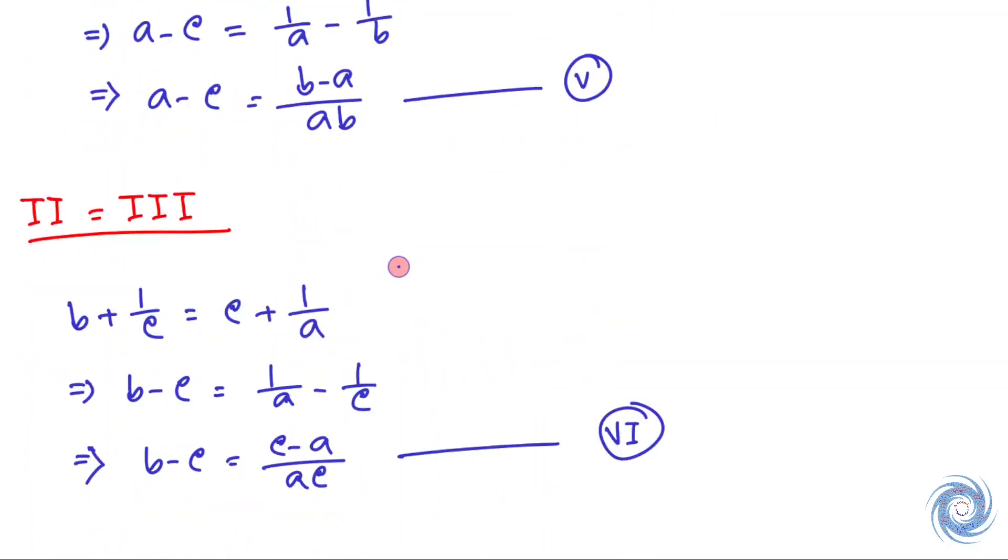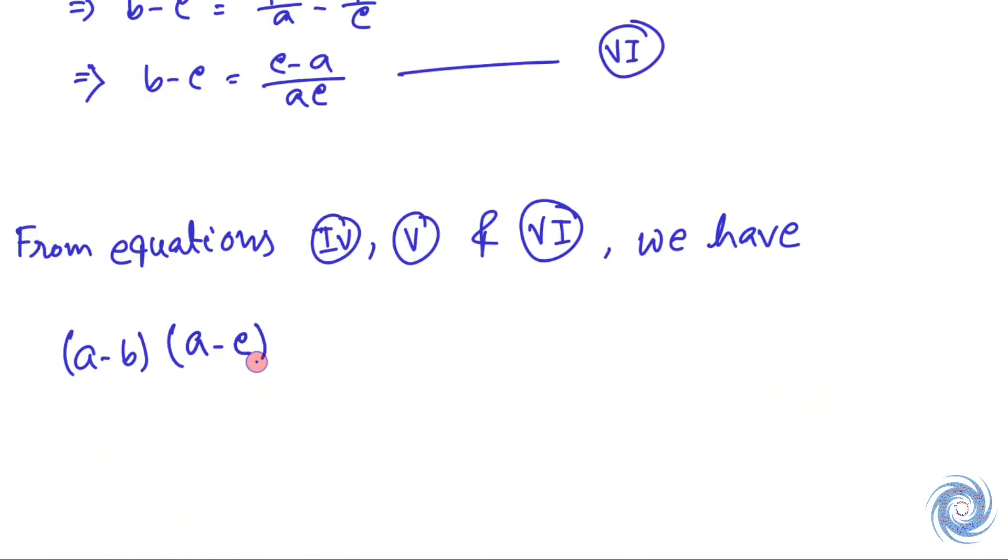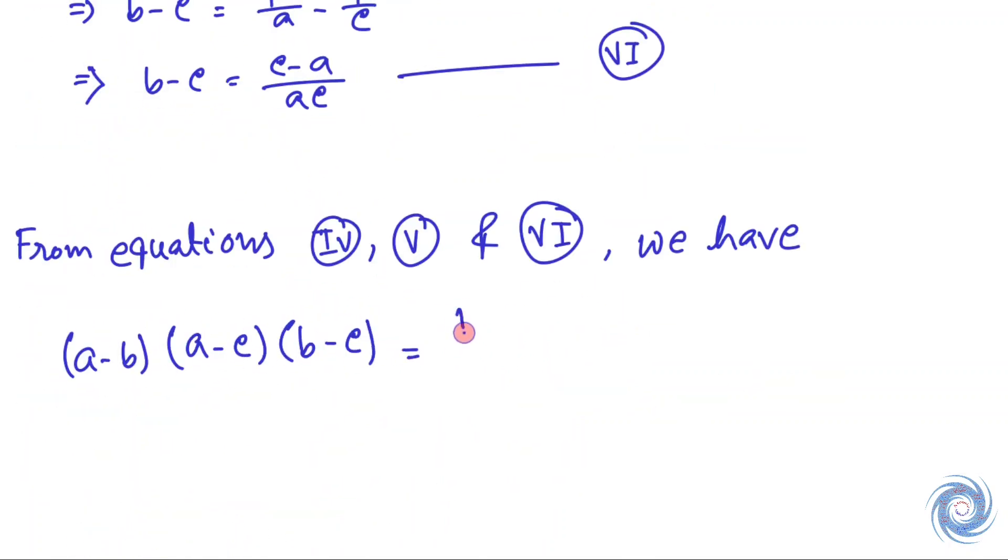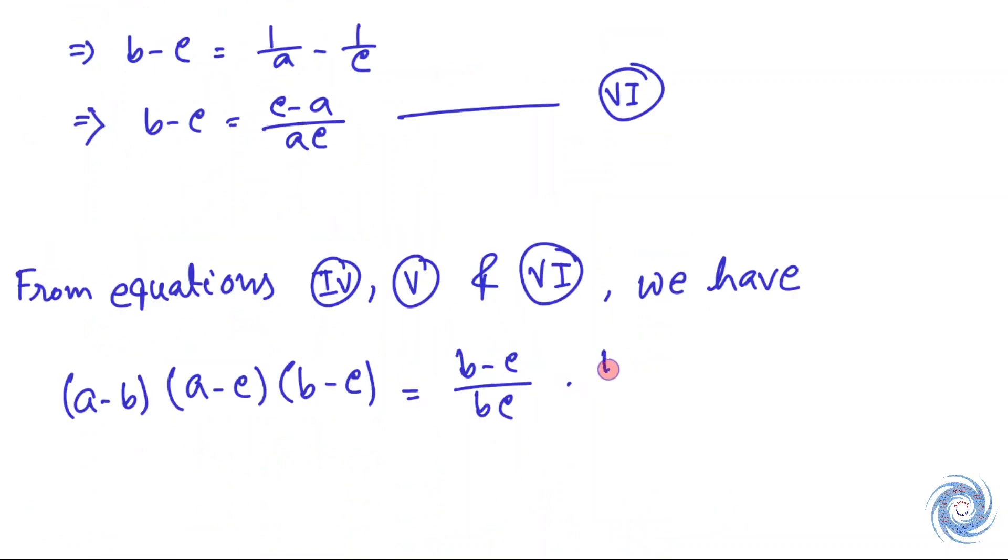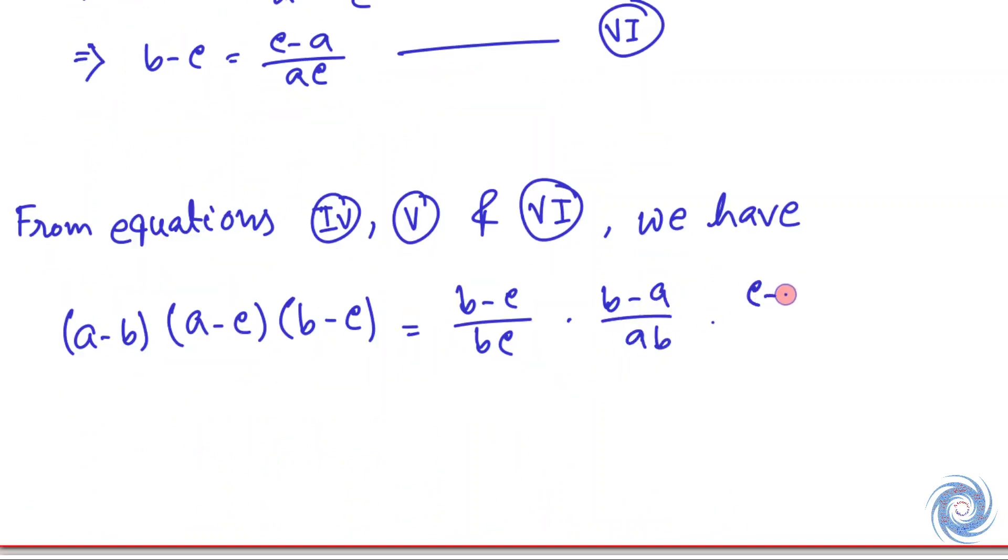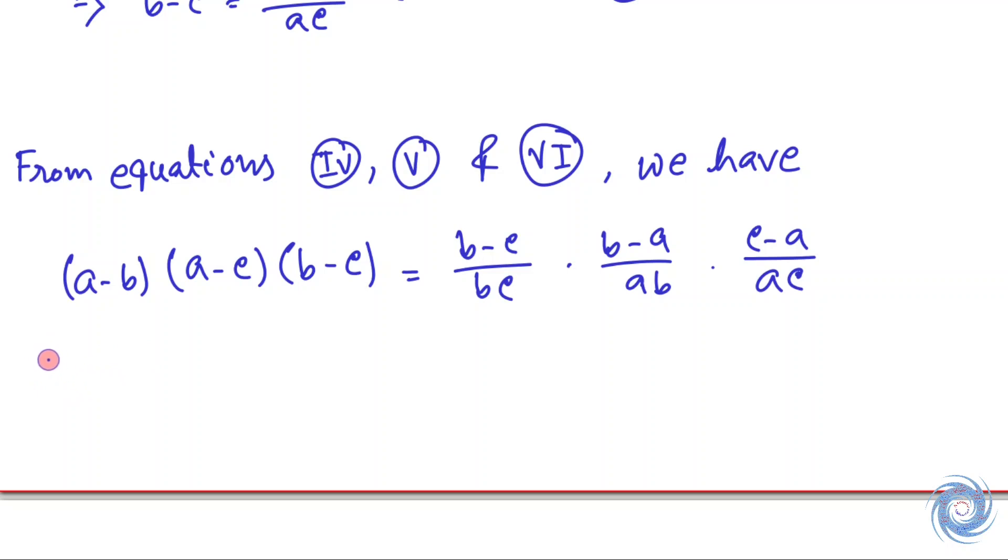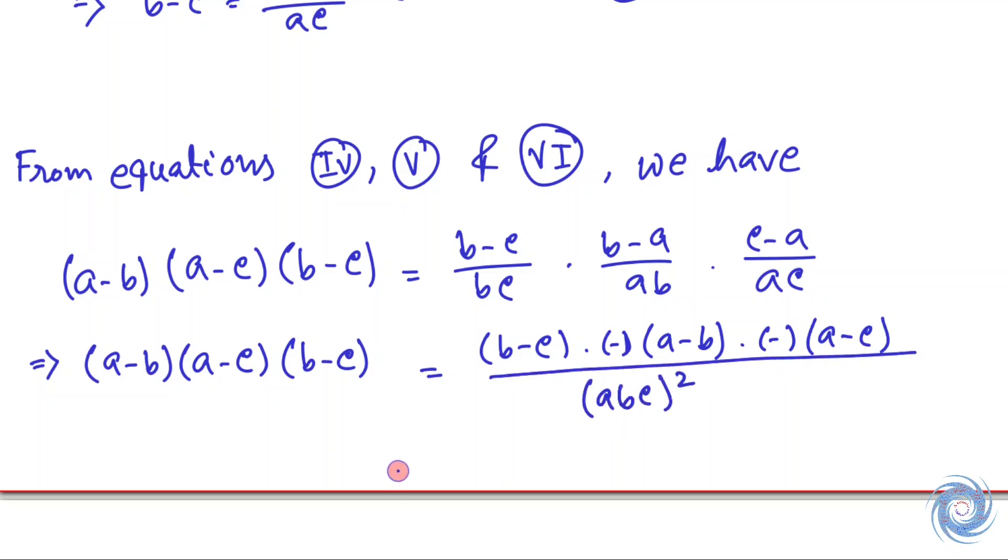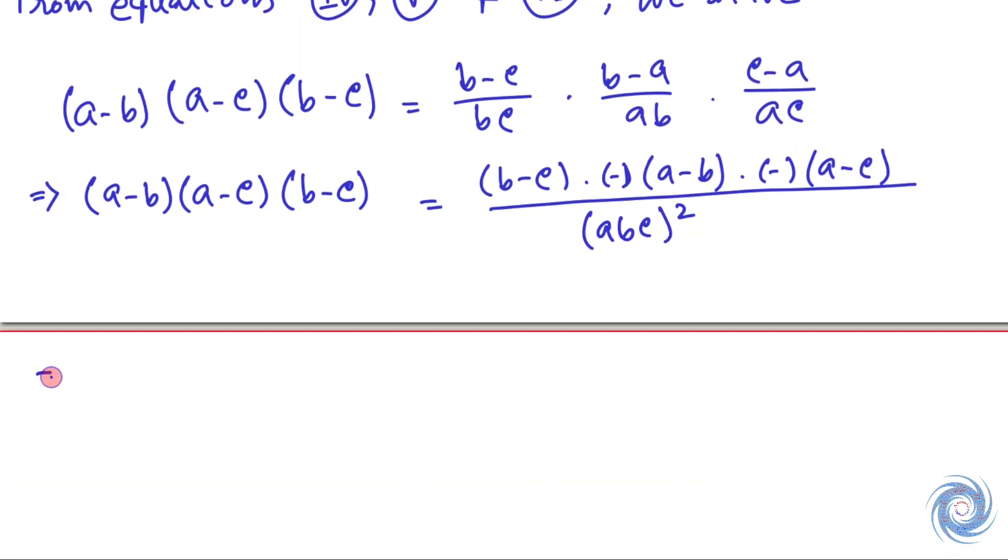So we have (a-b)(a-c)(b-c) equals (b-c) over bc times (b-a) over ab times (c-a) over ac. This implies (abc)² equals (a-b)(b-c)(a-c) over (a-b)(b-c)(a-c), which simplifies.